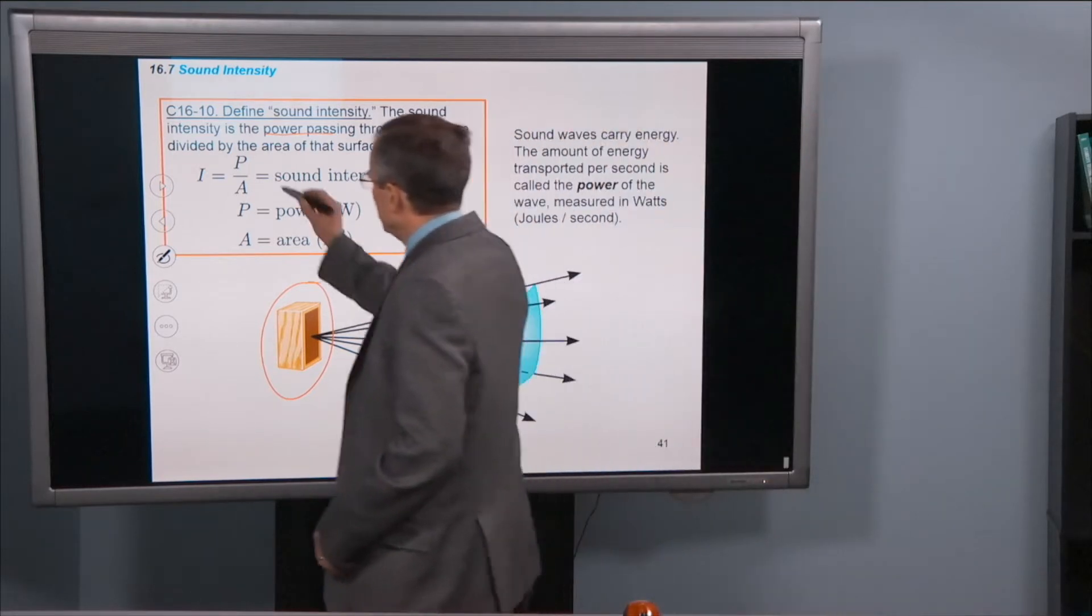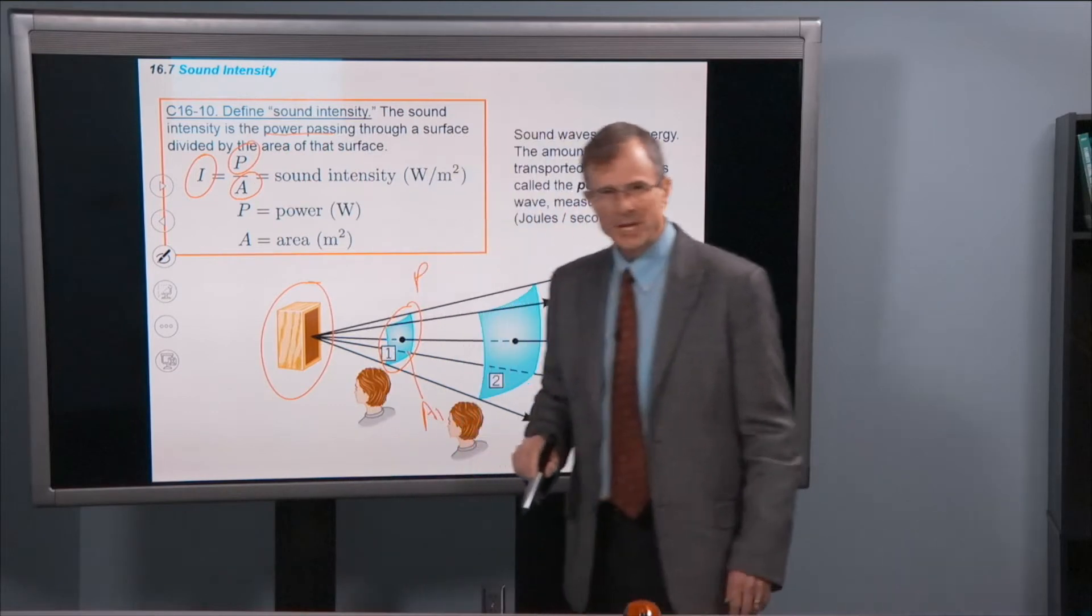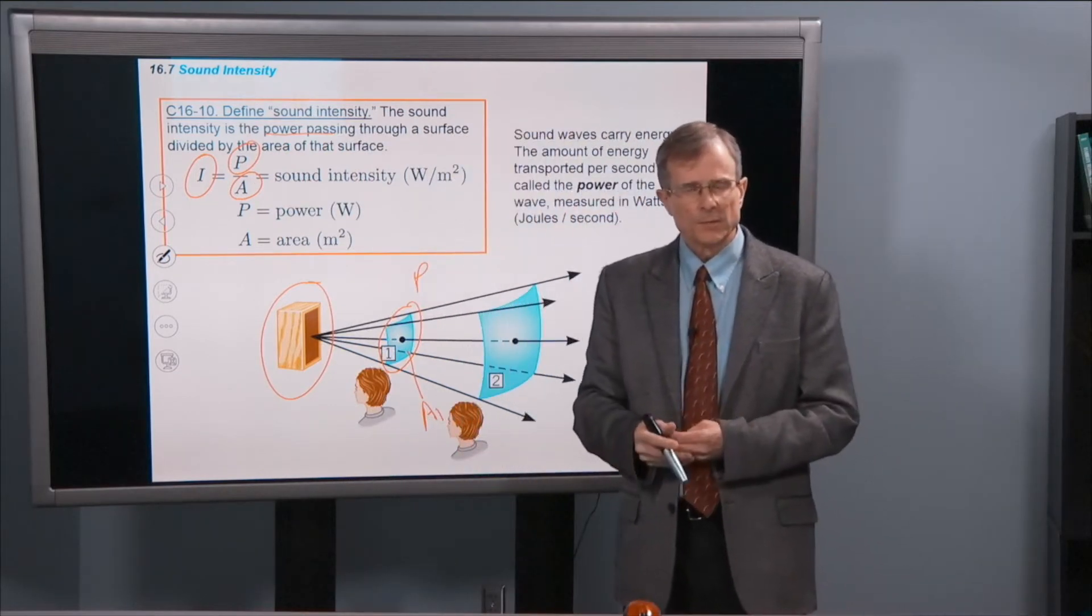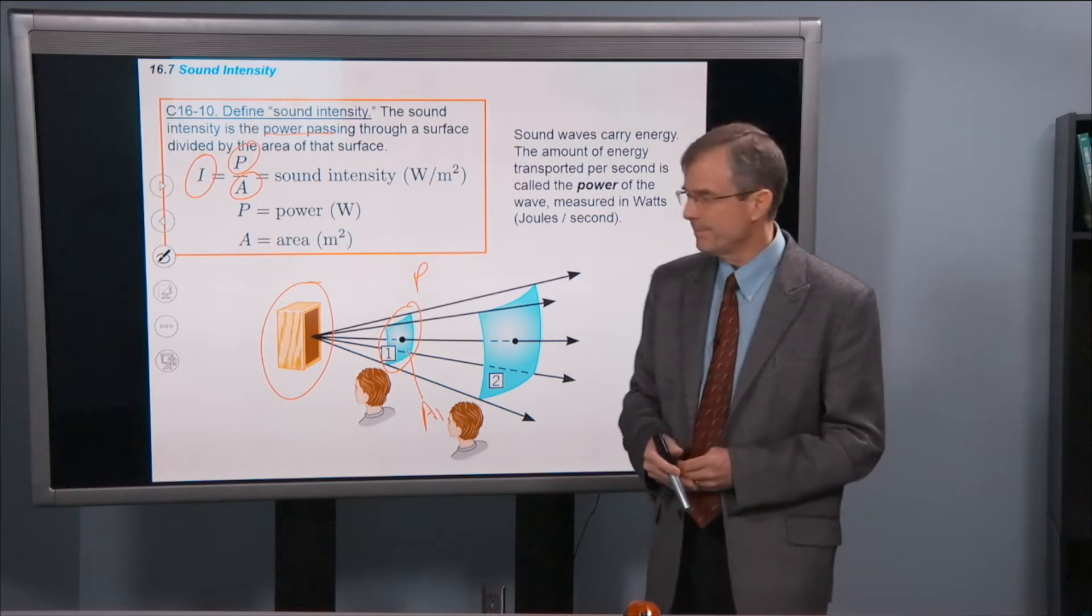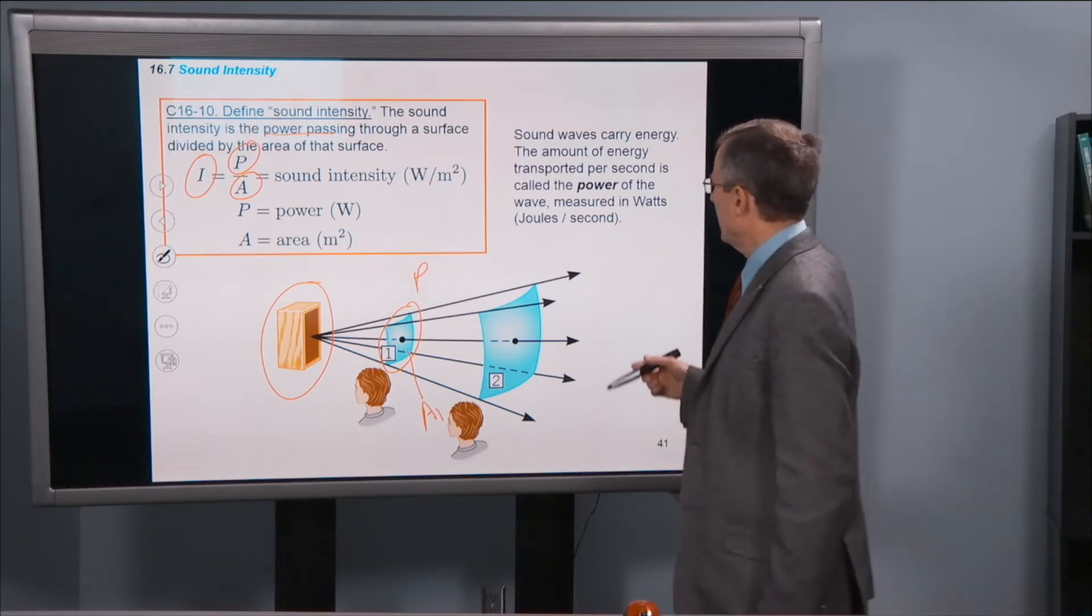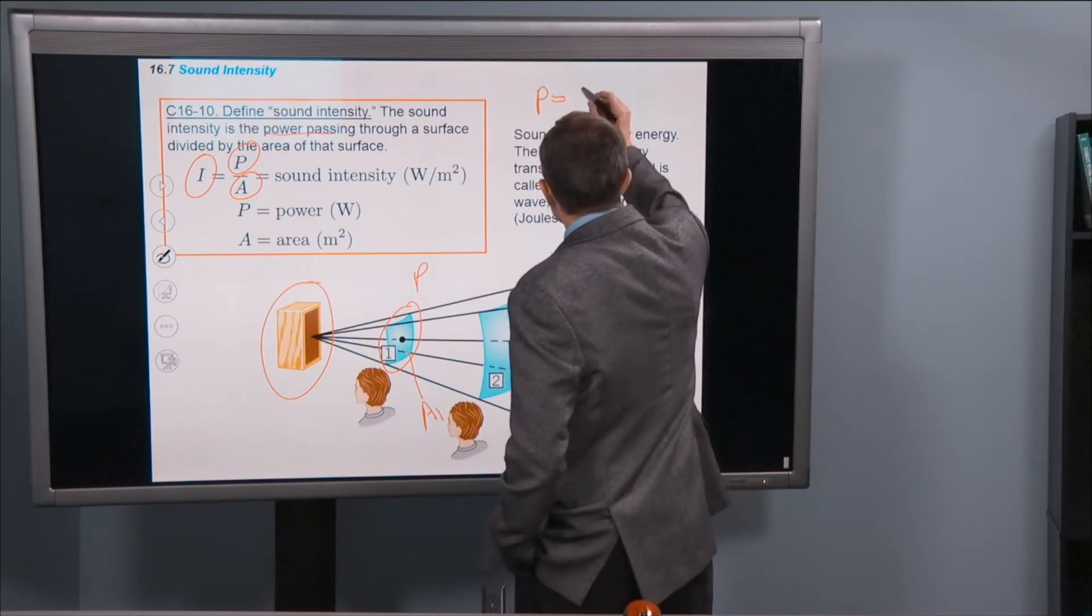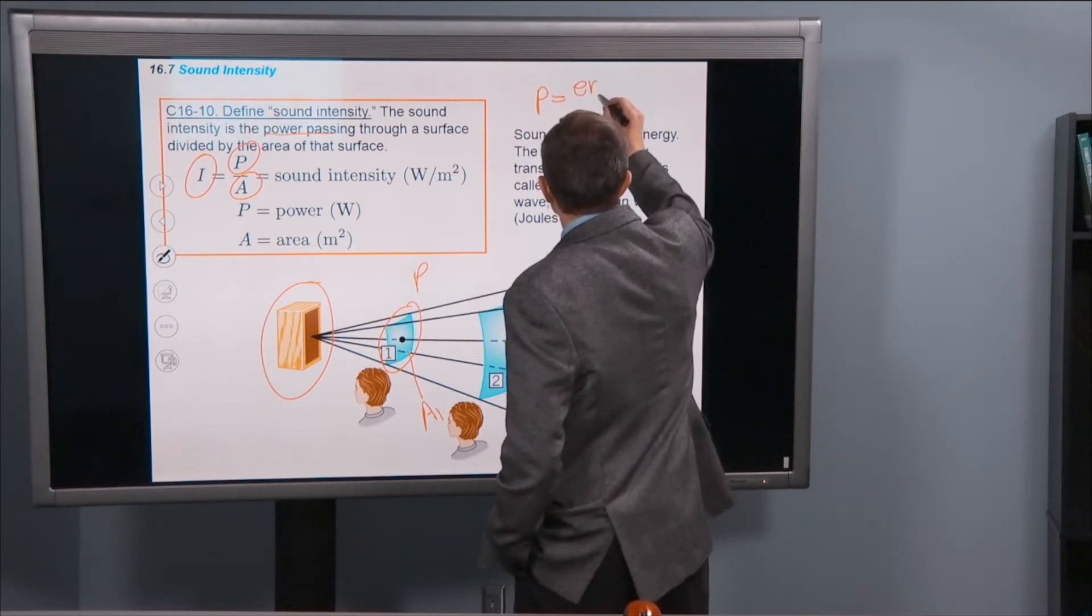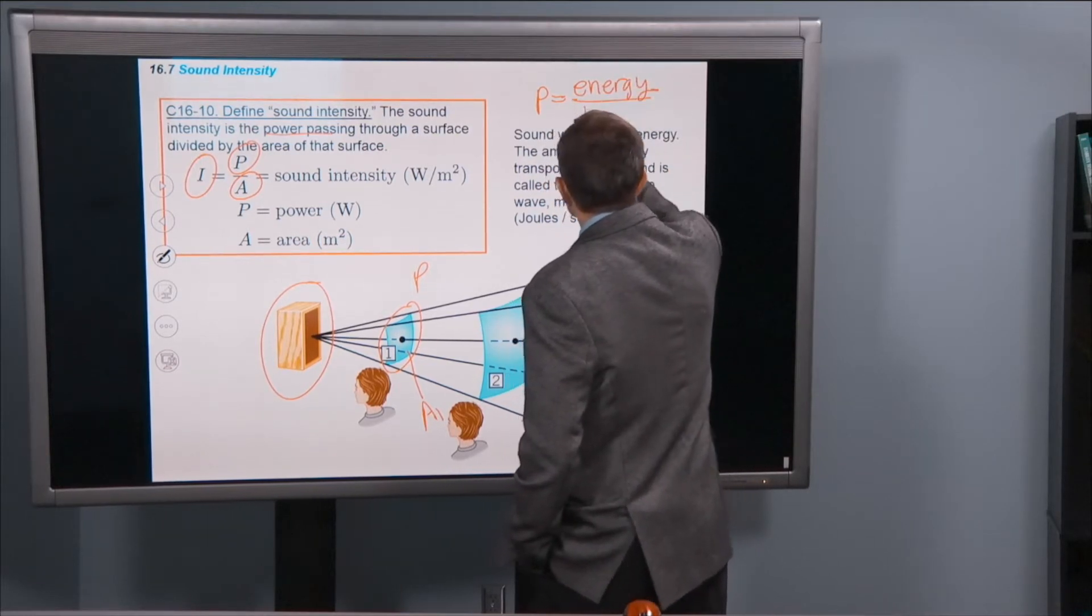then the power or the intensity is the power per unit area. And let's remind ourselves a little bit about what power is. From last semester or whenever you took physics 2110, we defined power as an energy or a work divided by a time.